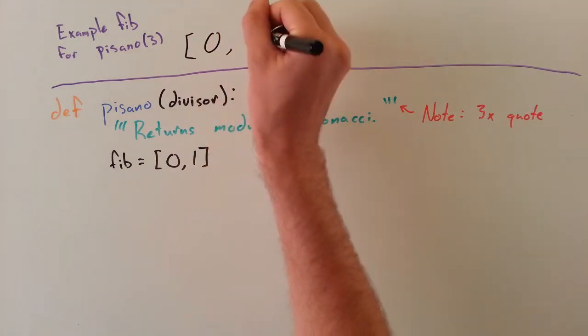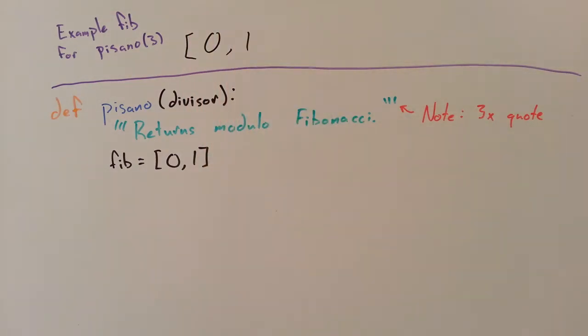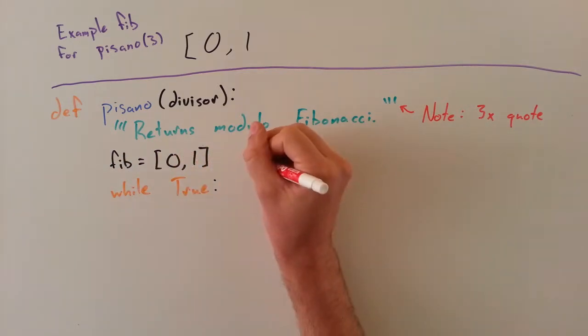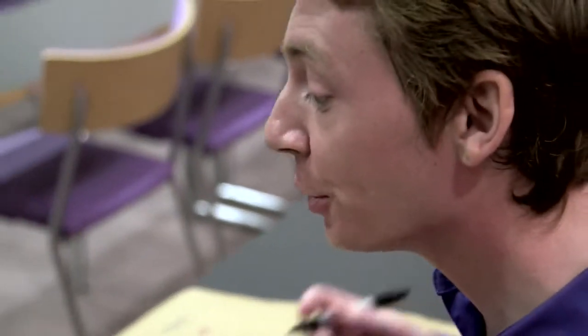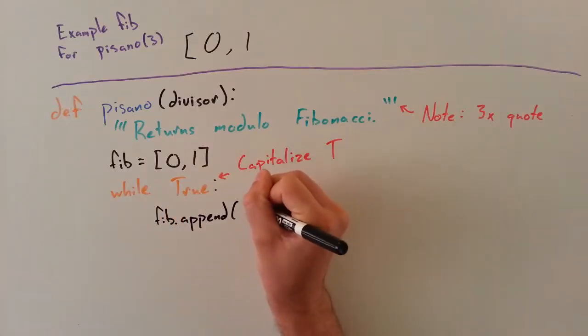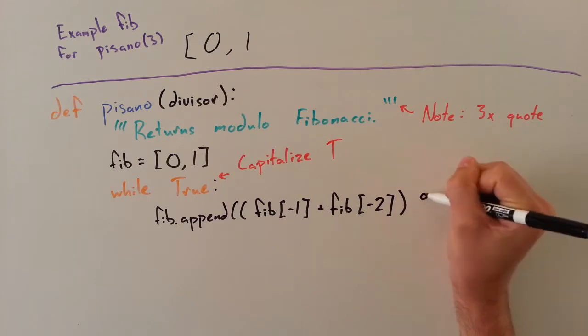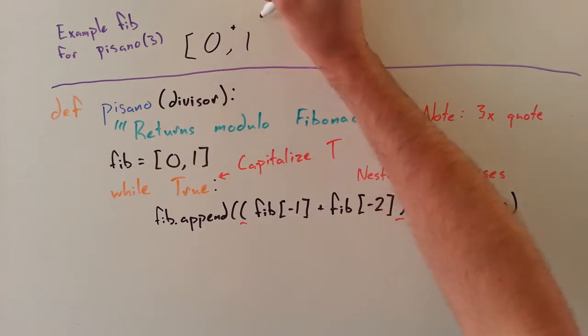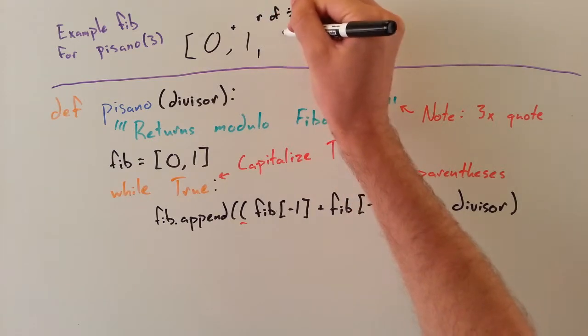Now as the rest of the sequence is generated the same steps will be repeated over and over. The simplest way to do this is a while true loop. Here come the meat and potatoes. There's a property of these remainders that you can just add up the previous two remainders. We append to the array the sum of the two previous numbers and modulo by the divisor. In other words add the first and second number over from the right.